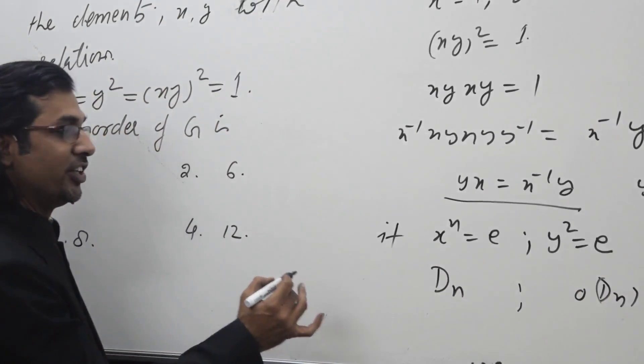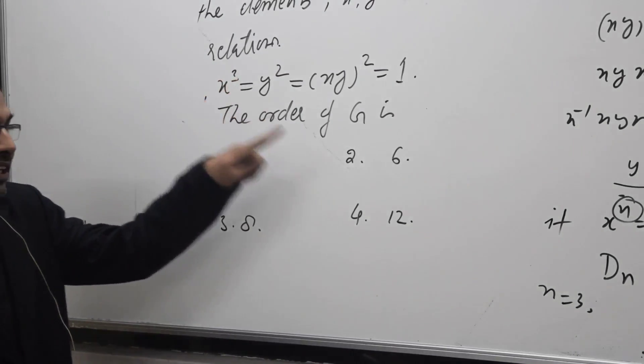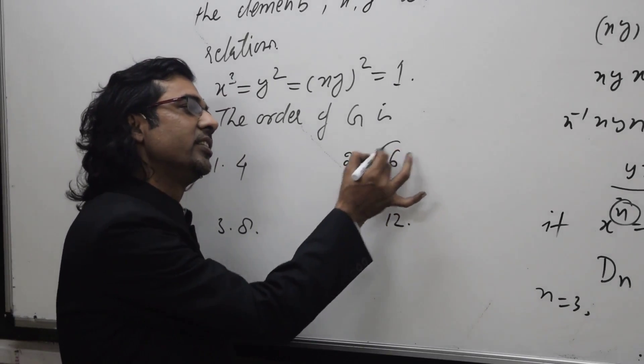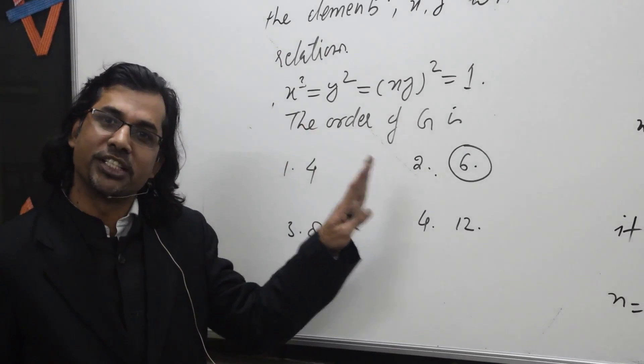Here n is given as 3. So in this case, the answer is 6. So this is nothing but d3, a non-abelian group of order 6.